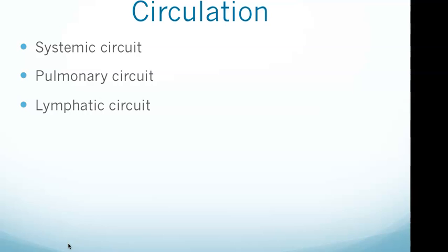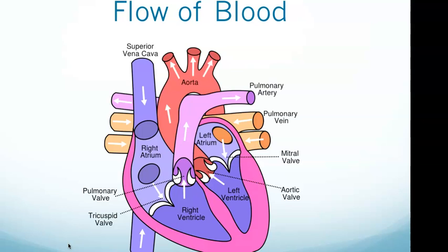Moving on to circulation, we have the systemic circuit, the pulmonary circuit, and the lymphatic system. The systemic circuit carries oxygenated blood away from the left ventricle and returns deoxygenated blood to the right atrium. The pulmonary circuit contains blood vessels that carry blood to and from the lungs. The lymphatic system drains toxins and wastes from body tissues and removes foreign entities from circulation. All three of these are important to know.